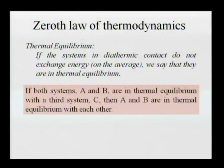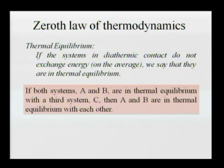Now, if two systems are each in thermal equilibrium with a third system — if system A and system B are each separately in thermal equilibrium with a third system — it means that system A and B are also in thermal equilibrium with each other. Think about what the zeroth law of thermodynamics means in terms of exchanging heat during handshakes.